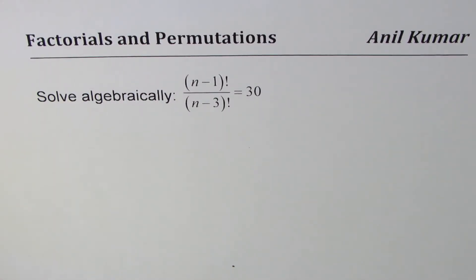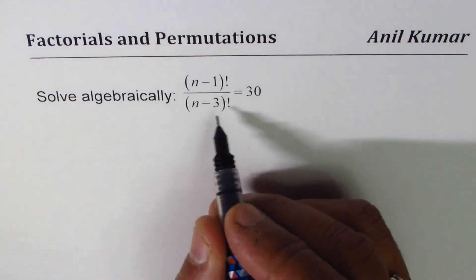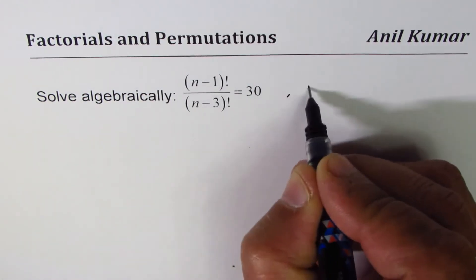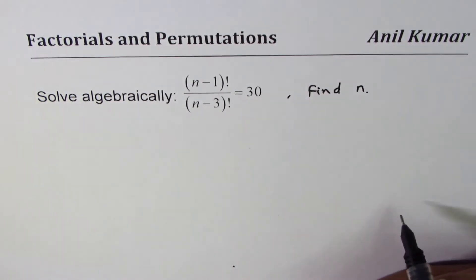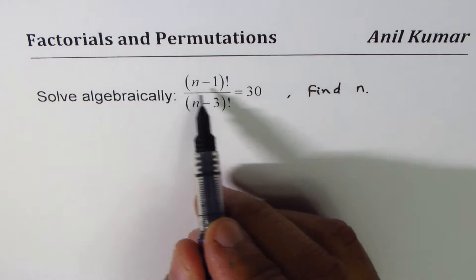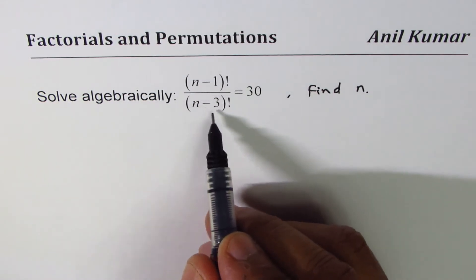I am Anil Kumar and we will explore factorials in this particular video. The question here is: solve algebraically (n-1)! divided by (n-3)! equals 30. That means we need to find the value of n. So basically it means find n.